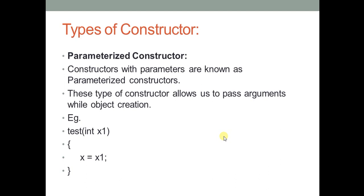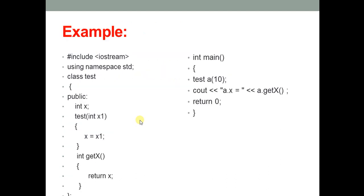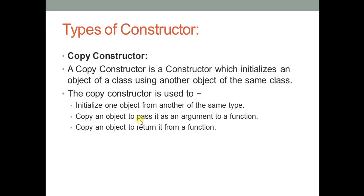A parameterized constructor is quite similar to the default constructor, but the difference is that in a parameterized constructor there will be some arguments. This type of constructor allows us to pass arguments while creating the object — at the time of object creation we pass the values, and those values are copied to the parameterized constructor.